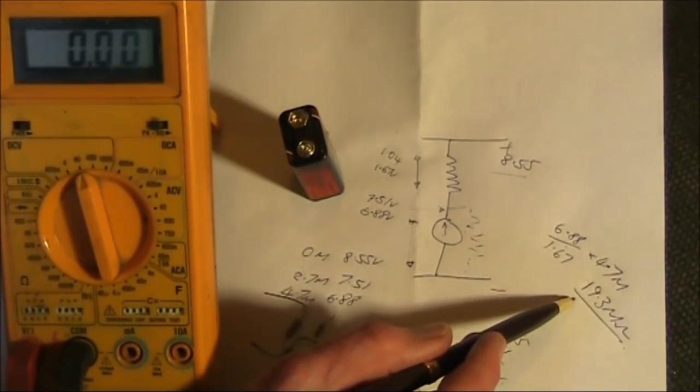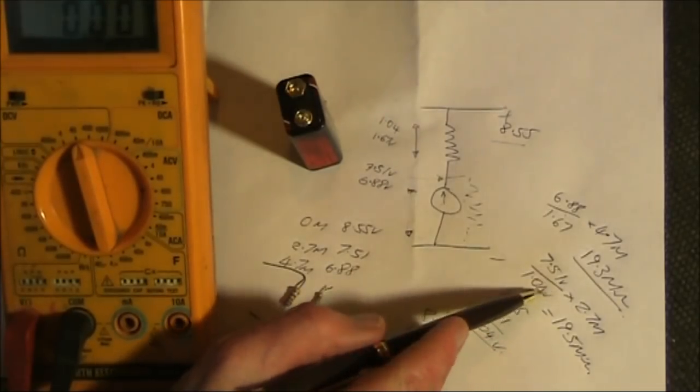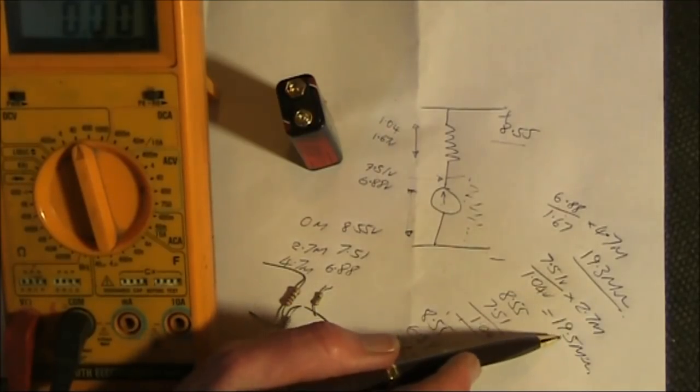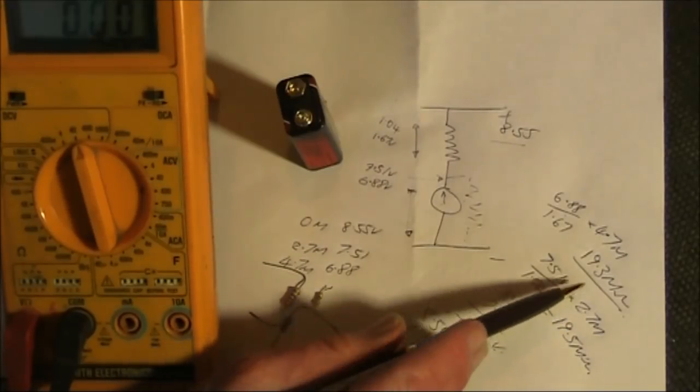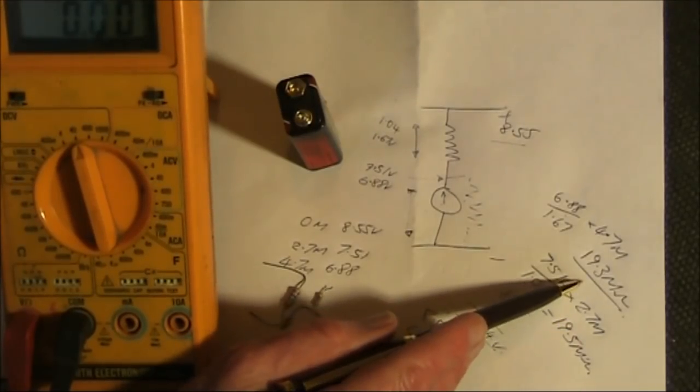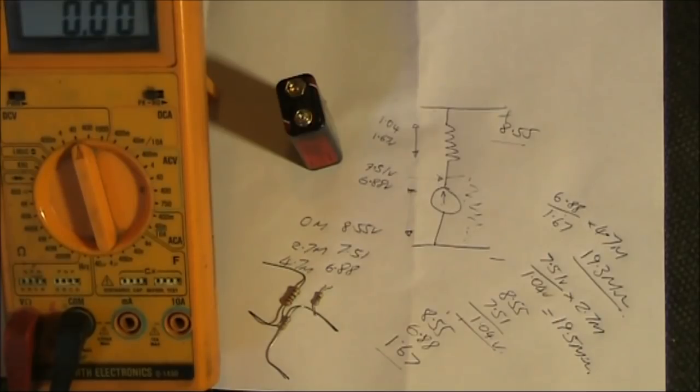Let's do a similar calculation, but using the 2.7 meg resistor. 7.51 volts divided by 1.04 volts times 2.7 megohm, and it comes out to 19.5 megohm. So very close to what we calculated with our 4.7 megohm resistor, just as a check. So if you're building that RF probe, then we can use as our calculation a meter resistance of around 19 to 20 megohm.